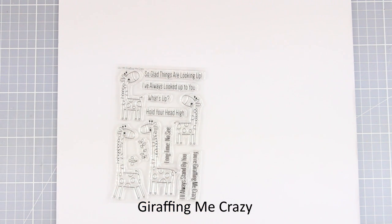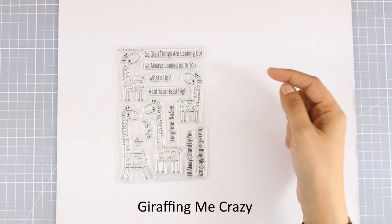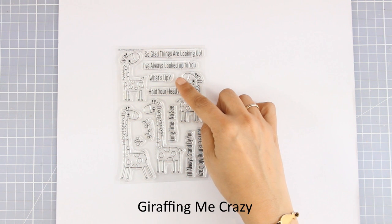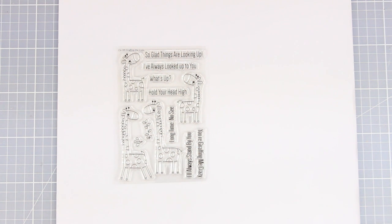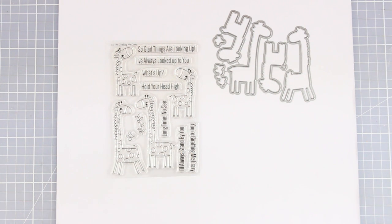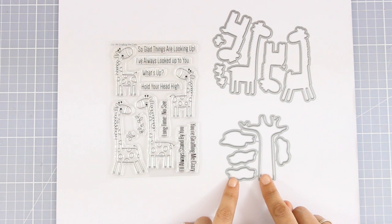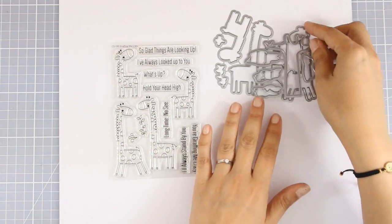Another adorable 4x6 stamp set is Giraffing Me Crazy. It comes with four different giraffes and lovely sentiments such as 'So glad things are looking up,' 'I have always looked up to you,' 'What's up?' and many more. There are matching dies that you can use to cut out all the images, but there is also this die set called Safari Tree. It is sold separately but you can use it beautifully to create lovely scenes that match perfectly with your giraffes. I'm going to show you tomorrow how I'm going to use those two sets together.